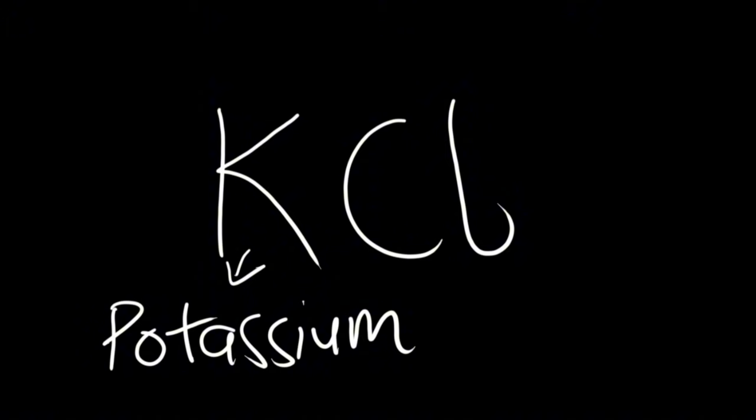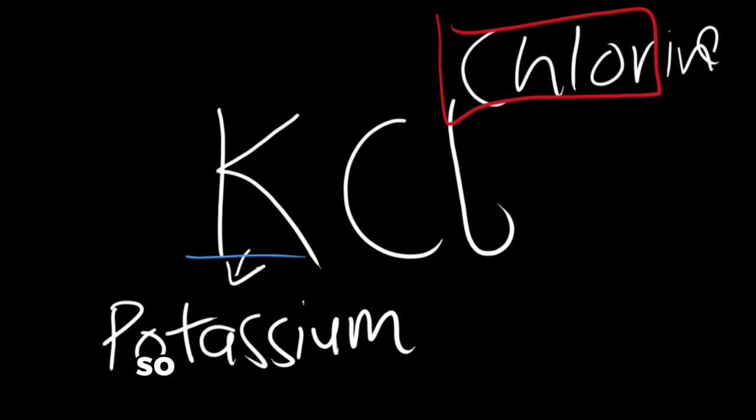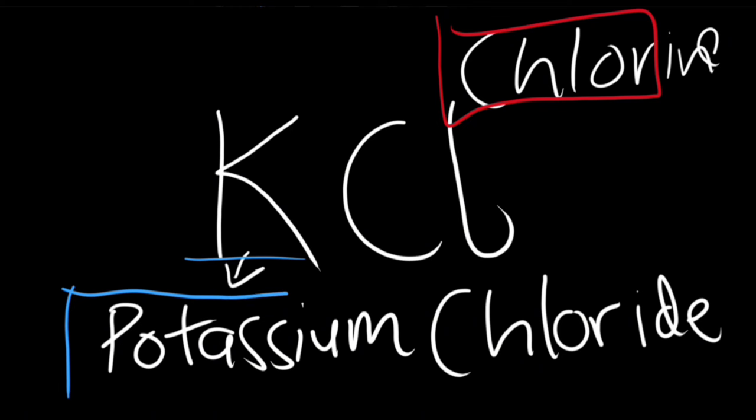And Cl is chlorine. So you'll write here chlorine. And you'll just take the root, which is chlor. And then at the end, you'll add -ide. That's how you can simply name a type 1 compound.